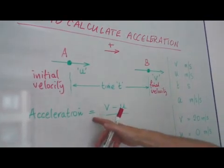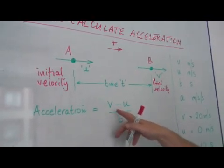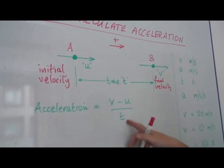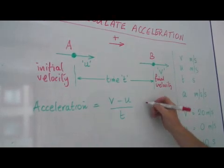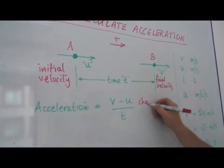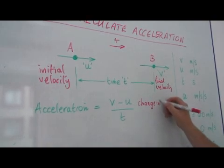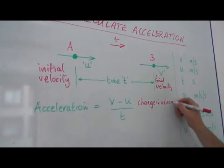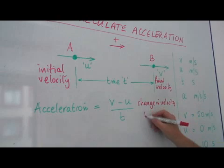So the acceleration is defined as v minus u divided by t. v minus u is the change in velocity, and t is the time taken.